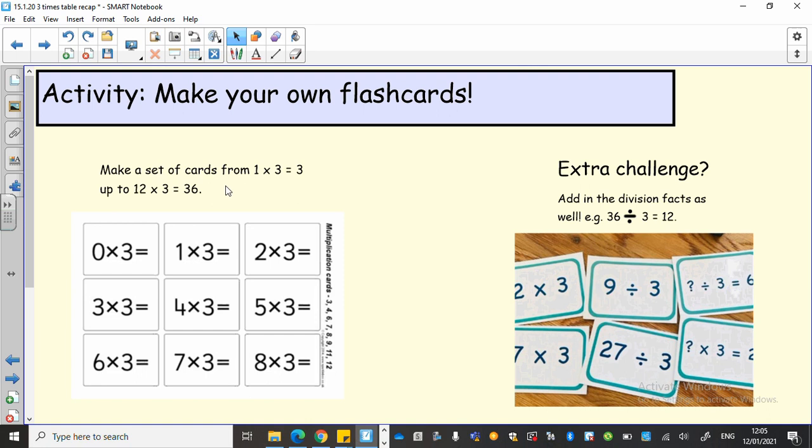So you're going to make your own set and then you're going to have a little bit of a practice with them. If that seems a little bit easy for you, if you're really, really confident with your threes, for an extra challenge I want you to make those but I also want you to make division facts as well. So you won't end up with 12 cards, you'll end up with 24, because you'll have the division facts. For example, 36 divided by 3 equals 12, and you'll go all the way down to 3 divided by 3 equals 1. So if you want that extra challenge, please, please do that because the division facts are really important to know as well.